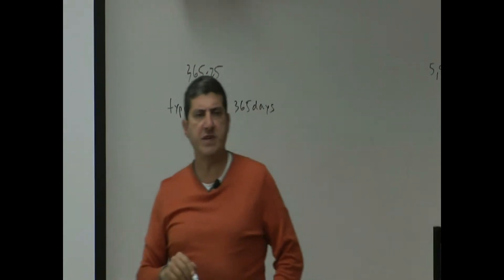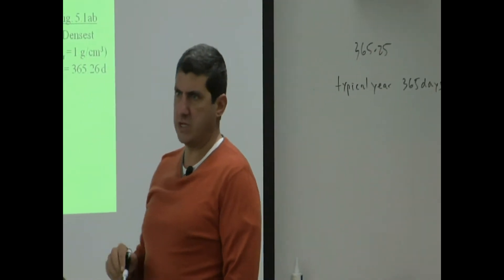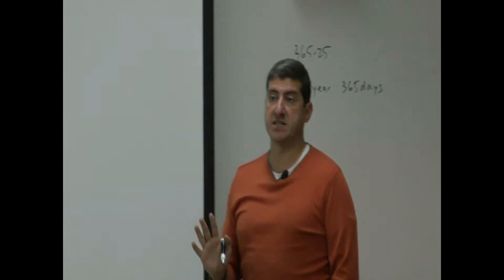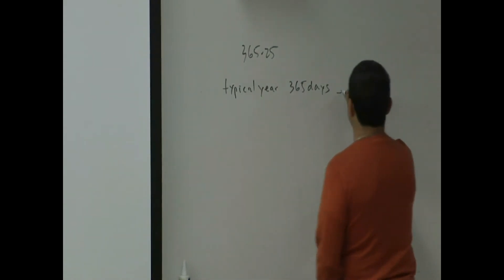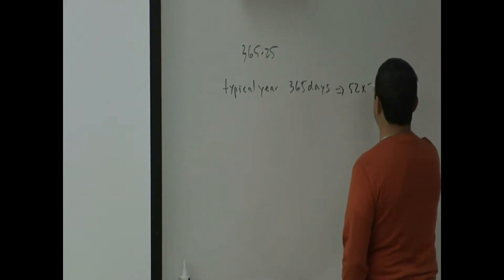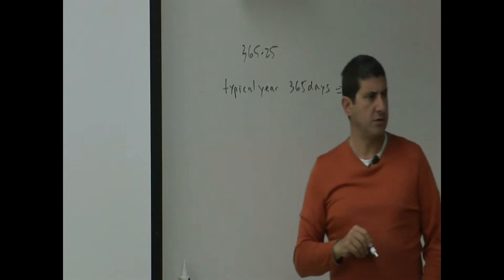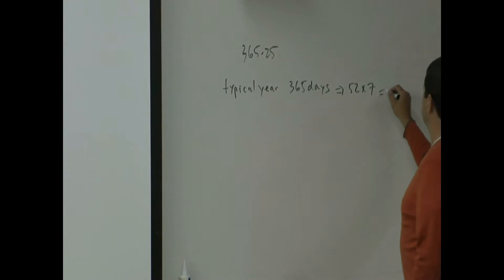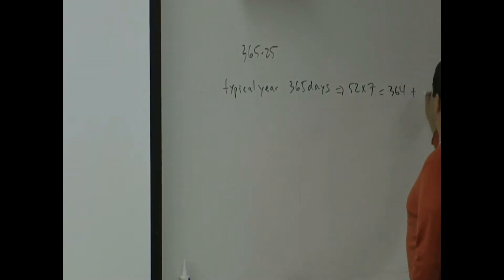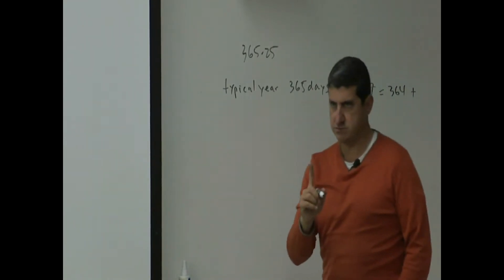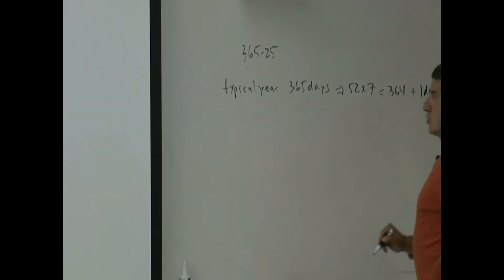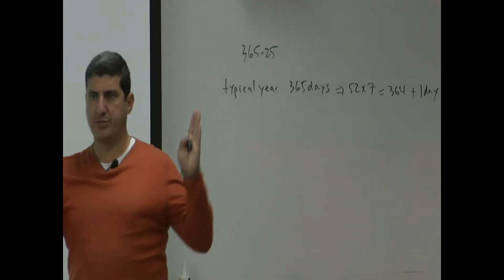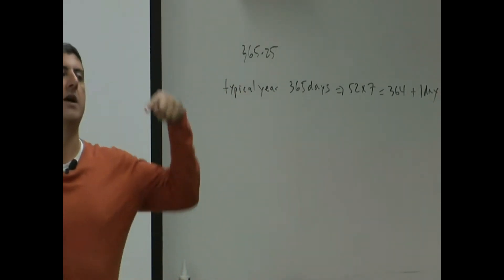How many weeks is that? 52 complete weeks, because each week has seven days. 52 times 7 gives you 364, plus an extra day. So a typical year contains 52 complete whole weeks and an extra day.